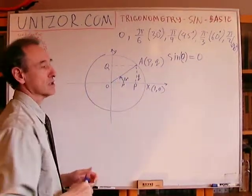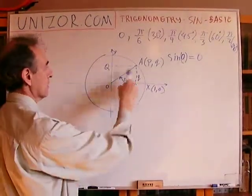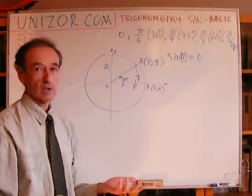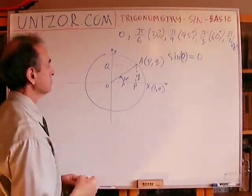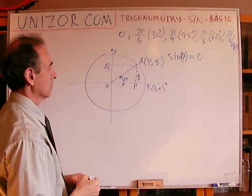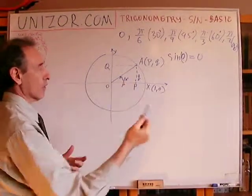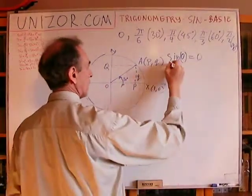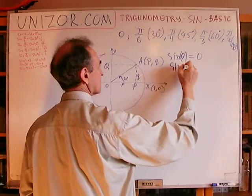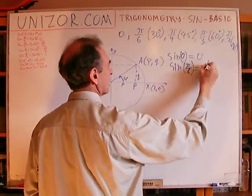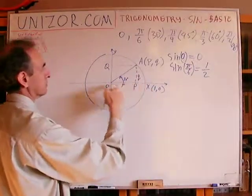Well, if this is 30 degrees, then we know that an opposite cathetus, which is Q, is half of hypotenuse. Now, the hypotenuse is 1 because it's a unit circle. Q is our ordinate. So basically, what we have come up with is that the sine of π over 6, which is 30 degrees, is one-half.